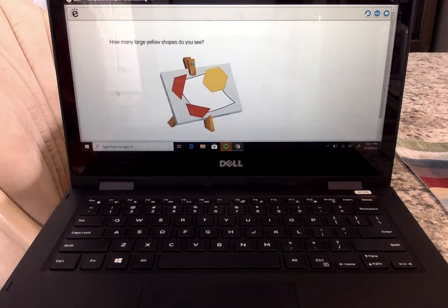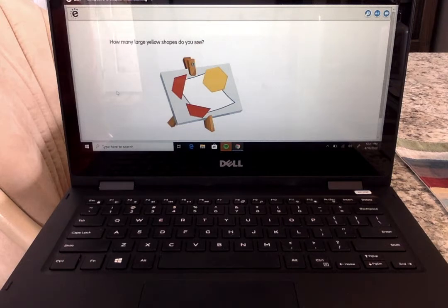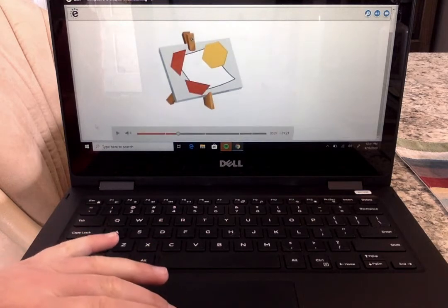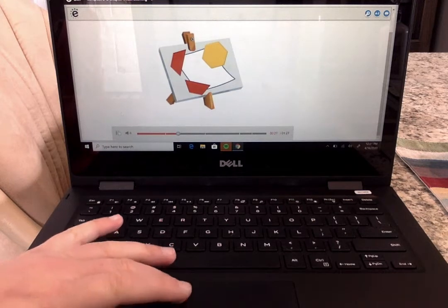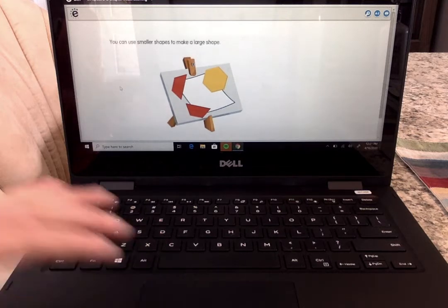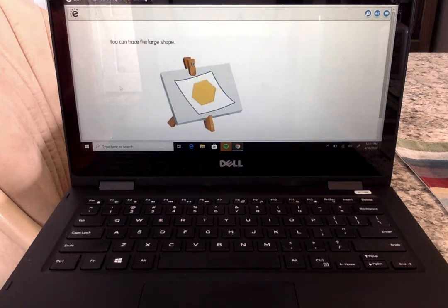How many large yellow shapes do you see? That's a hexagon. How many? One. You can use smaller shapes to make a large shape. You can trace the large shape.